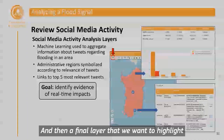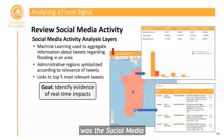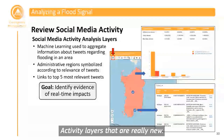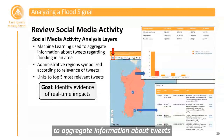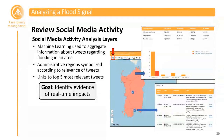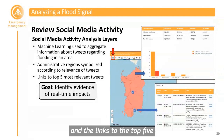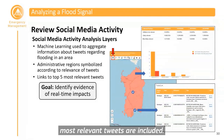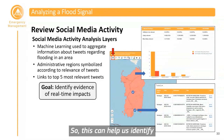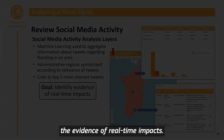A final layer to highlight is the social media activity layer, which is quite new. It uses machine learning to aggregate information about tweets regarding flooding in an area. Administrative regions are symbolized according to the relevance of tweets, and links to the top five most relevant tweets are included. This can help identify evidence of real-time impacts.